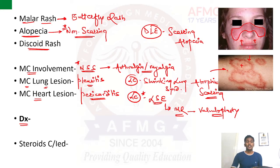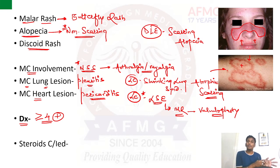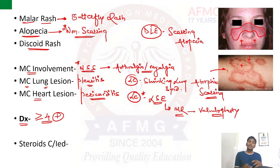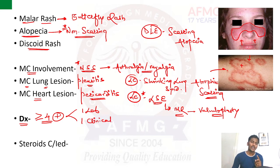For diagnosis of SLE, at least four features should be present. These include LAF features — lab features like the various autoantibodies, and low complement levels (C3 levels would be low) — as well as clinical features from the BOSS ARE MAD mnemonic. At least one lab and one clinical feature must be present, i.e., one lab plus three clinical or one clinical plus three lab.